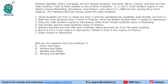Hello everyone. Welcome to AptitudeJab. This set from CAT 2018 slot 1 DILR says that there are 8 students, 4 female students and 4 male students. Their names start from A, B, C, D. They study in 3 institutes X, Y and Z. Each student majors in one subject among marketing, operations and finance and minors in a different one among these subjects.